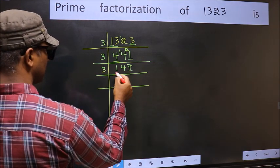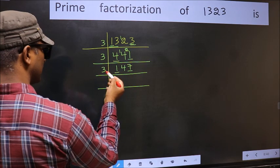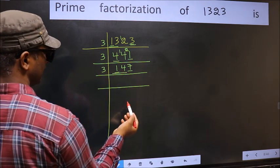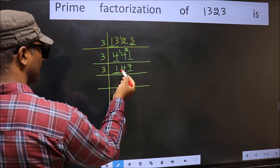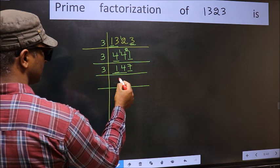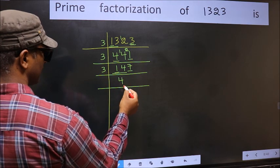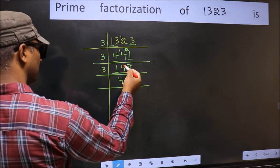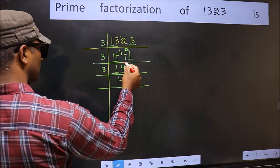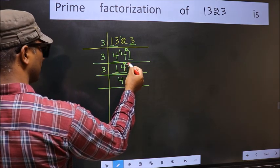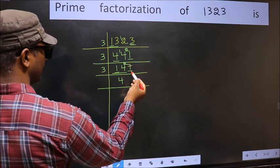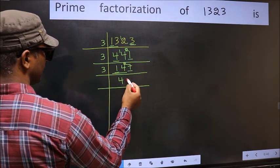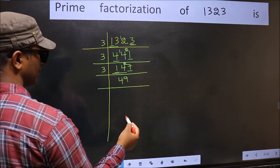First number 1 is smaller than 3, so take 2 numbers: 14. A number close to 14 in the 3 times table is 3×4=12. 14 minus 12 is 2, carried forward: 27. We get 27 in the 3 table as 3×9=27.